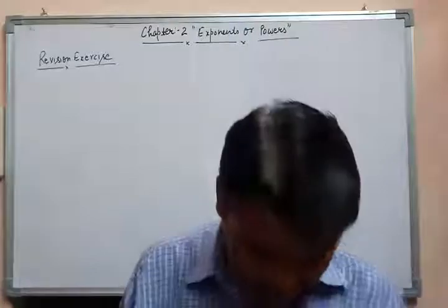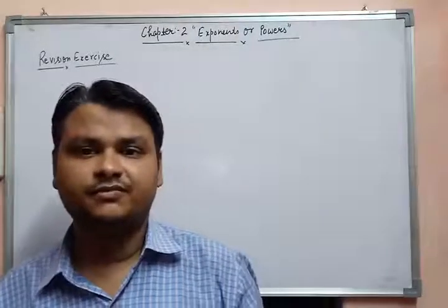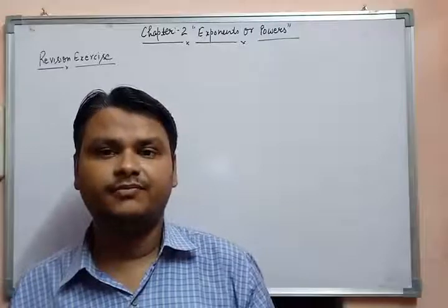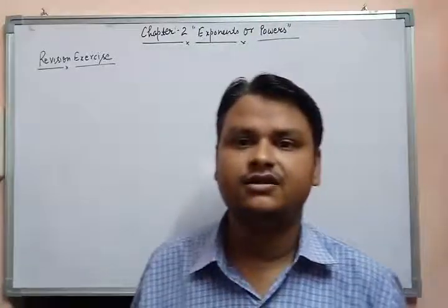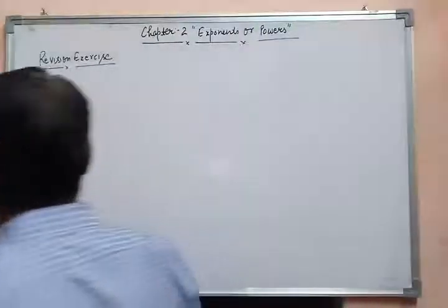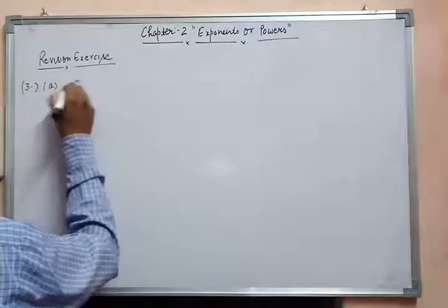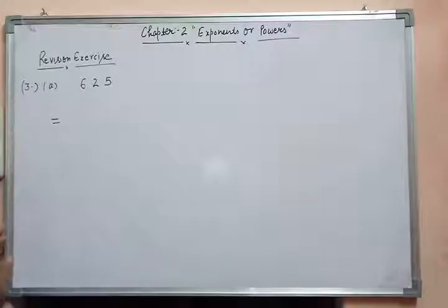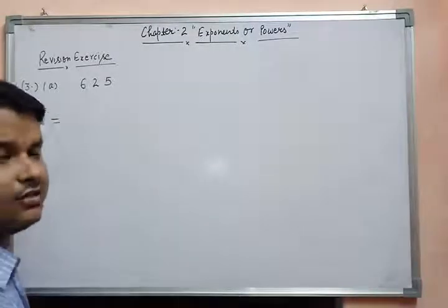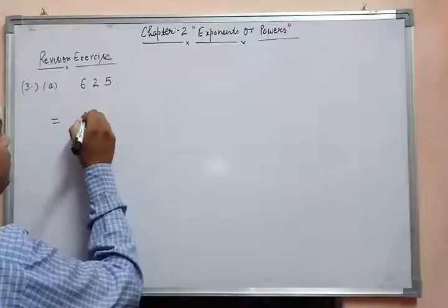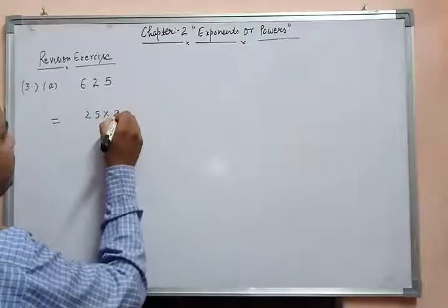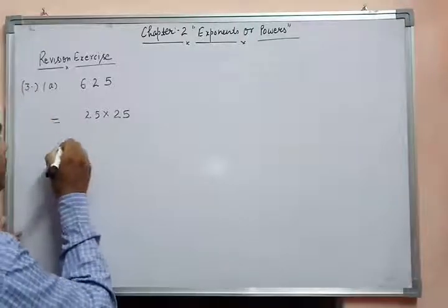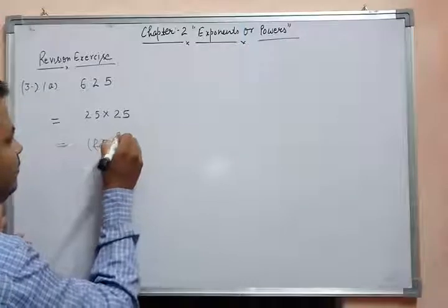Today I will solve some remaining questions of the revision exercise. Question number 3 asks you to express the following with a negative exponent — first apply the laws of exponents, then convert the answer into negative exponent form. The first part is 625. First of all, you have to find the factors of 625. It is 25 × 25, because 25 squared equals 625, so it can be written as 25 whole squared.